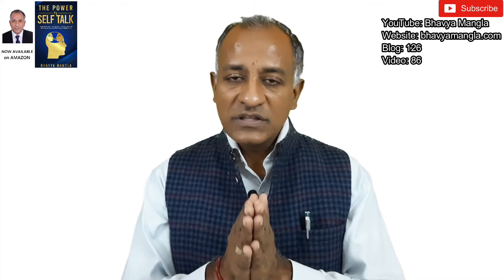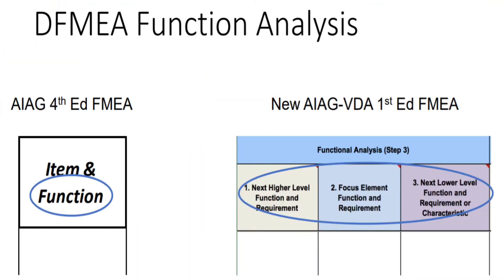To take an example with respect to DFMEA, if you can see the picture here, it shows three levels: number one is the next higher level, number two is the focus element for which we are doing the analysis, and number three is the next lower level. On the left-hand side, in FMEA fourth edition only the function was specified, and through that you needed to identify what it means. In FMEA first edition, things have been made a bit more clear.